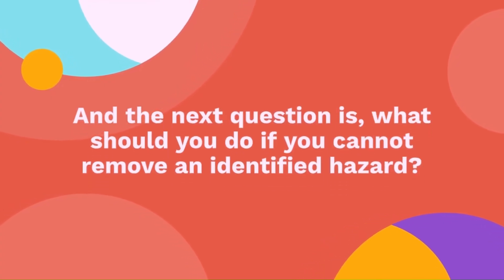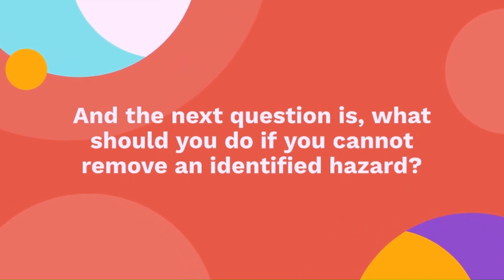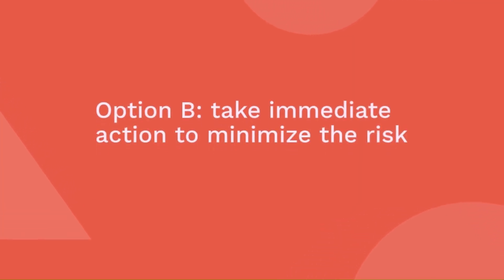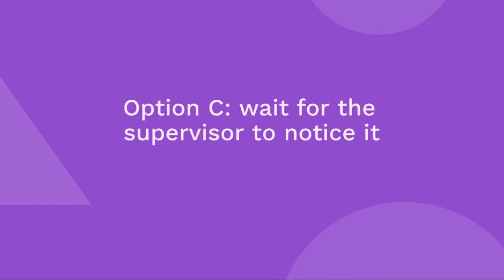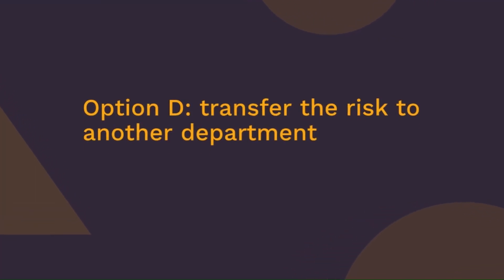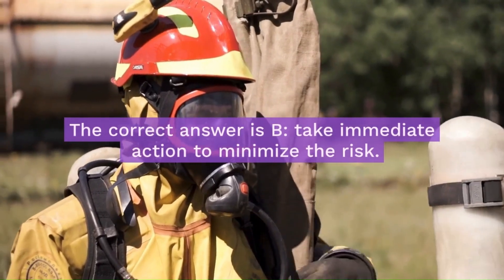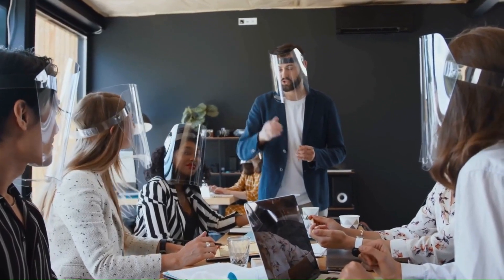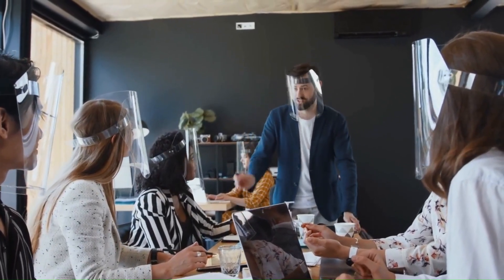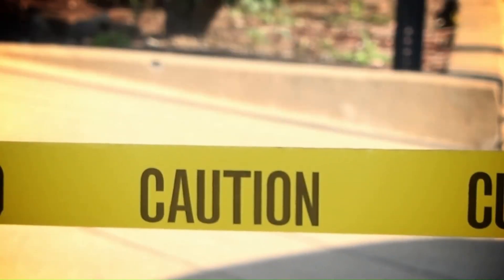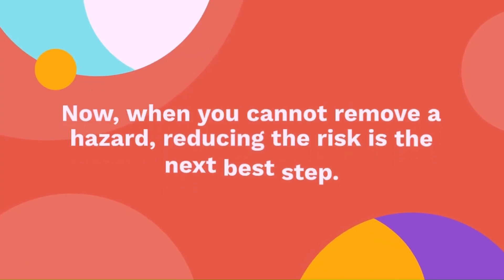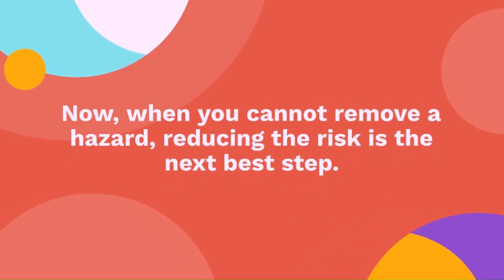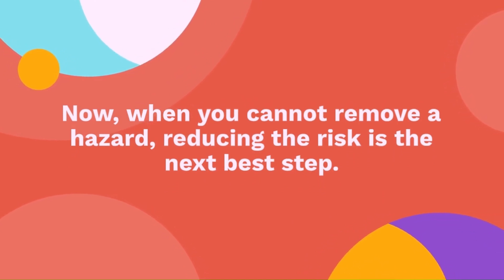Question 16: What should you do if you cannot remove an identified hazard? Option A — ignore it. Option B — take immediate action to minimize the risk. Option C — wait for the supervisor to notice it. Option D — transfer the risk to another department. The correct answer is take immediate action to minimize the risk. If you can't get rid of a hazard, do something to make it less dangerous, like putting up a warning sign. When you cannot remove a hazard, reducing the risk is the next best step.